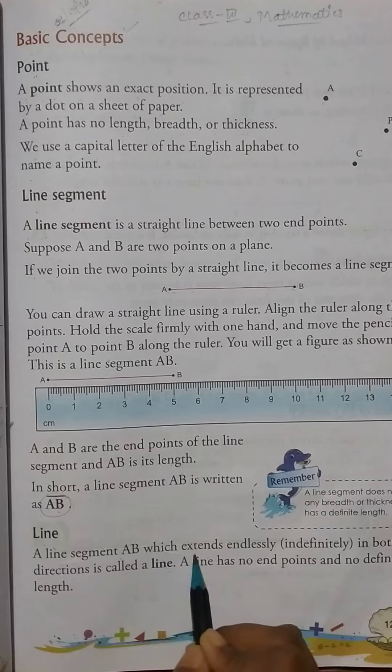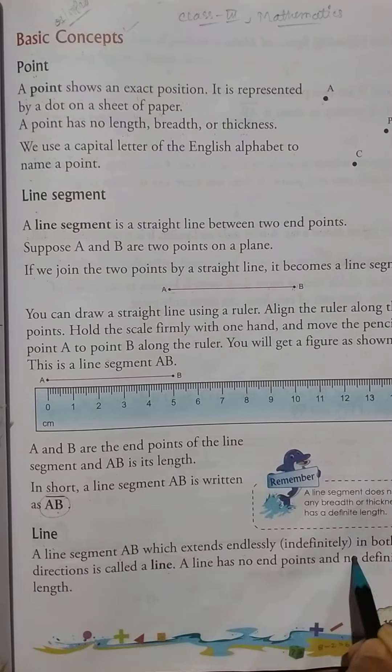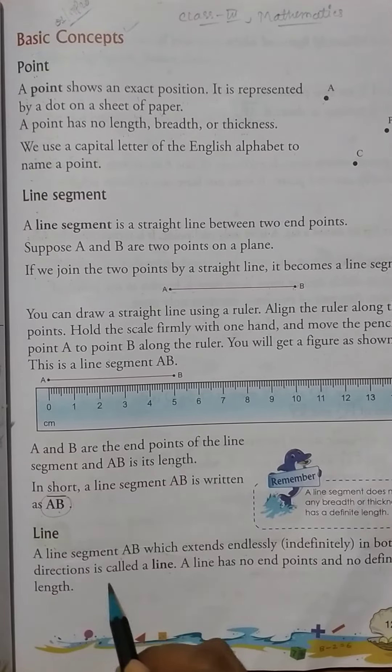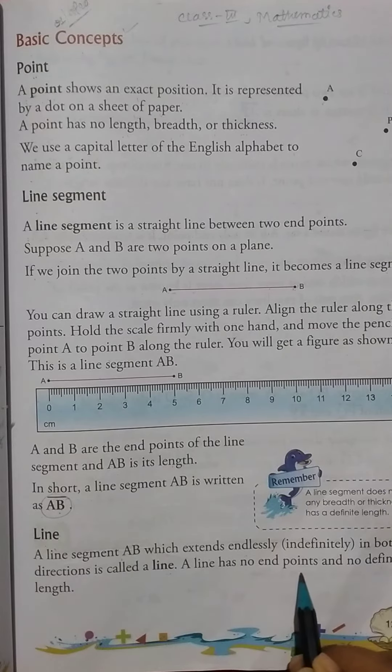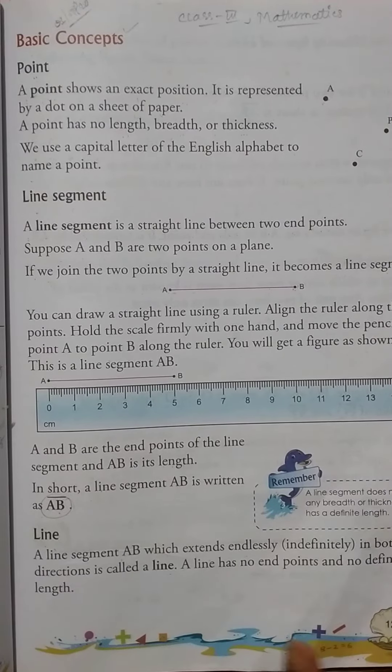A line segment AB which extends endlessly in both directions is called a line. A line has no end points and no definite length.